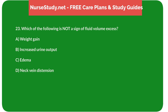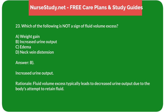Question 23: Which of the following is not a sign of fluid volume excess? A. Weight gain. B. Increased urine output. C. Edema. D. Neck vein distension. Answer: B. Increased urine output. Rationale: Fluid volume excess typically leads to decreased urine output due to the body's attempt to retain fluid.